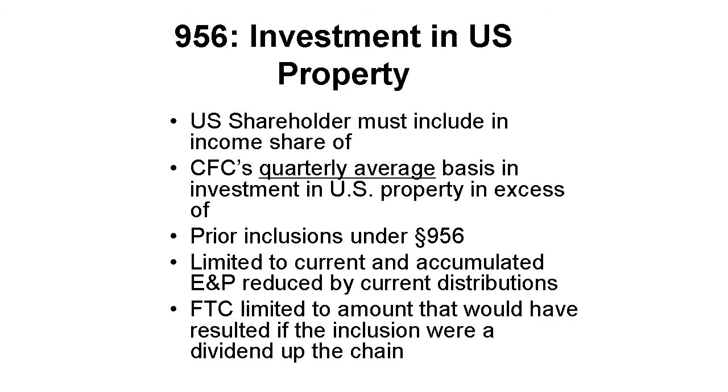The potential 956 inclusion is reduced by prior 956 inclusions. That's actual inclusions per the return as filed or amended, not what should have been. So if you make a mistake, you must catch up.